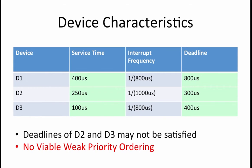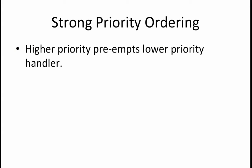Thus, there is no weak priority system ordering which is guaranteed to satisfy all of our system constraints. Now, let's reconsider the same question, assuming a strong priority ordering.